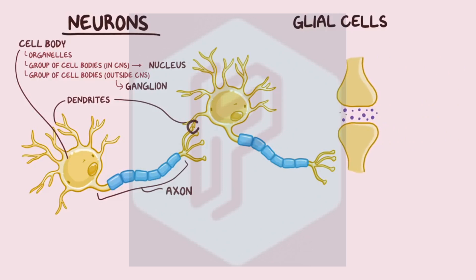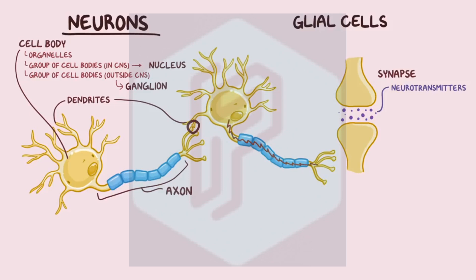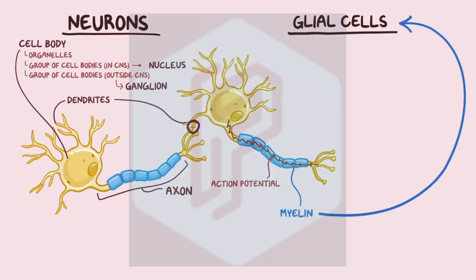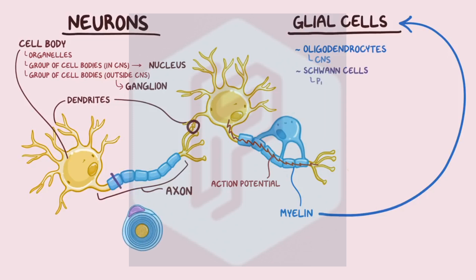Where two neurons come together is called a synapse, and that's where one end of an axon releases neurotransmitters, relaying the signal to the dendrites or directly to the cell body of the next neuron. To trigger the release of neurotransmitters, neurons use an electrical signal called the action potential that races down the axon. To help speed up that signal, axons are intermittently wrapped by a fatty protective sheath called myelin, which comes from glial cells like oligodendrocytes in the central nervous system and Schwann cells in the peripheral nervous system.